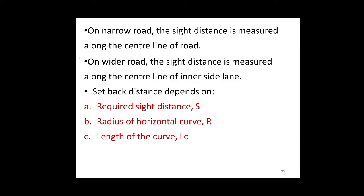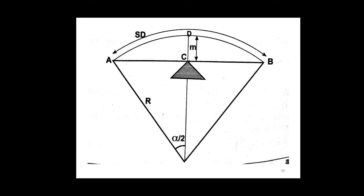On the narrow road, the side distance is measured along the center line of the road, whereas on wide roads the side distance is measured along the center line of the inner side lane. The side distance depends upon the following factors: first, the required side distance S; the radius of the horizontal curve R; and the length of the curve LC, which may be greater or lesser than S. From the figure, R is the radius of the horizontal curve, S is the required side distance from point A to point B, and M is the required setback which has to be provided in order to have a clear vision from point A to point B on a horizontal curve in order to avoid accidents.